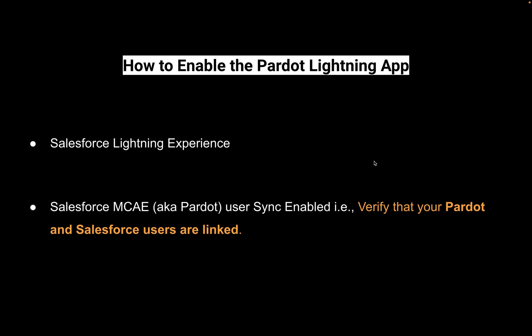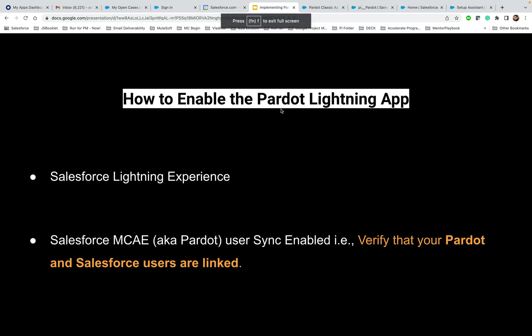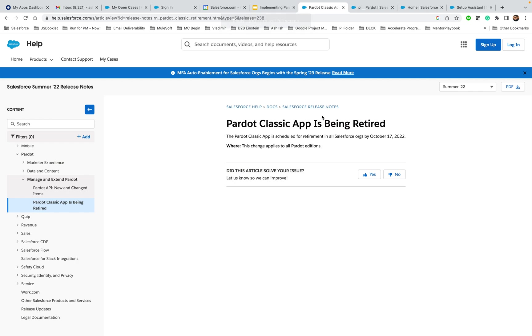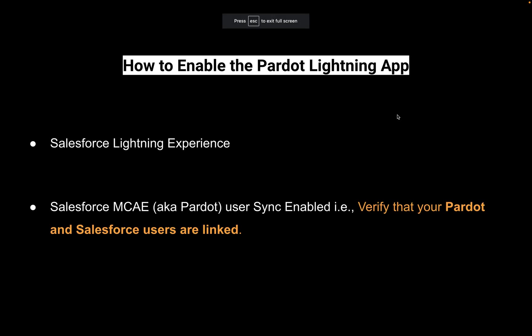How to enable the Pardot Lightning App, or how to give user access to Pardot Lightning App. You might be wondering why we need this. There could be many reasons, but the key reason is the Pardot Classic App is going to retire. This app is being retired soon, meaning you won't be able to access the Pardot Classic App. So either you should have access to Pardot Standalone App or Pardot Lightning App, and the best way to proceed is to enable Pardot Lightning App.